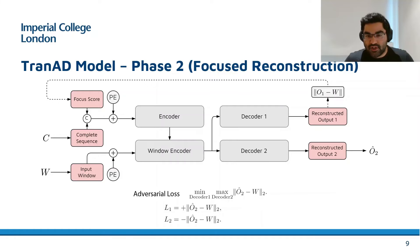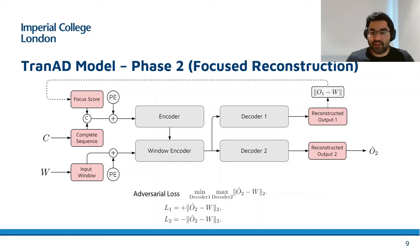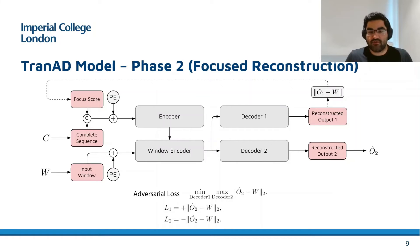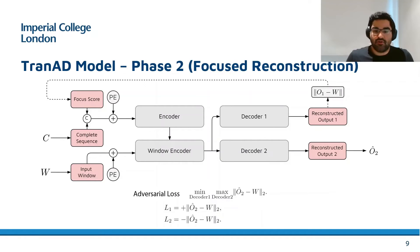The goal of the second phase is slightly different from that of the first phase. We want the focus codes to be as precise as possible, and to achieve this we use an adversarial training style where the objective of the second decoder is to act as an adversary to the first decoder.